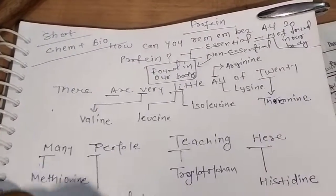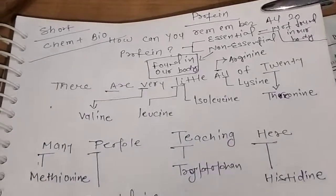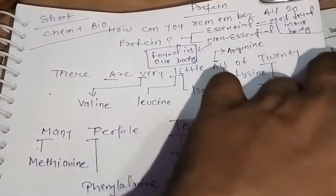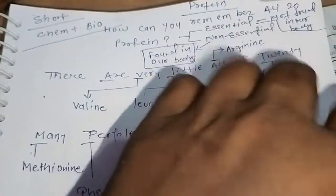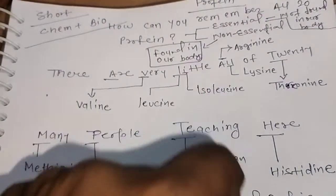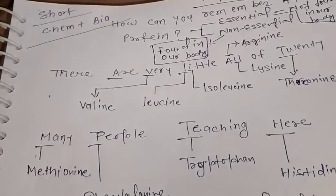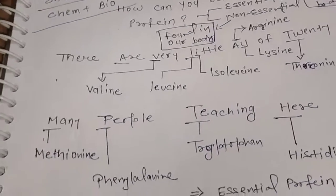Proteins are there two types: essential protein and non-essential protein. Essential protein is not found in our body. Non-essential protein is found in our body. First, let's discuss the essential proteins.